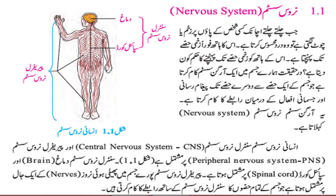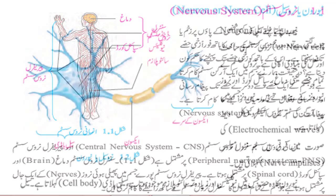انسانی nervous system، central nervous system یعنی CNS اور peripheral nervous system یعنی PNS پر مشتمل ہے۔ Central nervous system دماغ، brain اور spinal cord پر مشتمل ہوتا ہے۔ Peripheral nervous system پورے جسم میں پھیلی ہوئی nerves کے ایک جال پر مشتمل ہوتا ہے جو جسم کے تمام حصوں کا central nervous system کے ساتھ رابطے کا کام کرتی ہیں۔